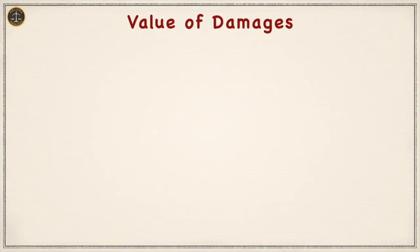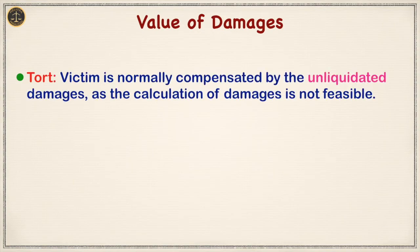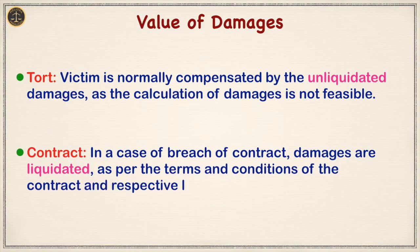Next, that is value of damages. In tort, the victim is normally compensated by unliquidated damages, as the calculation of damages is not feasible. On the other hand, in case of breach of contract, damages are liquidated as per the terms and conditions of the contract and the respective loss.